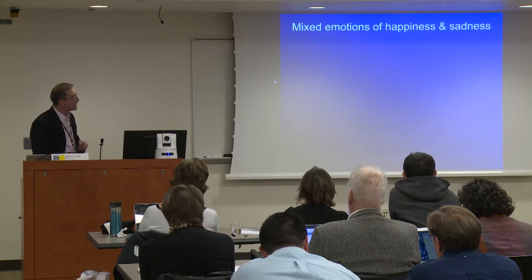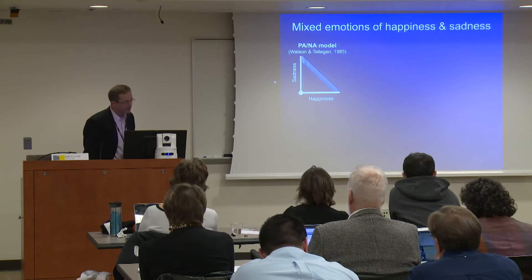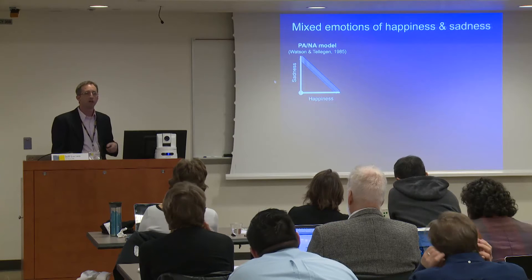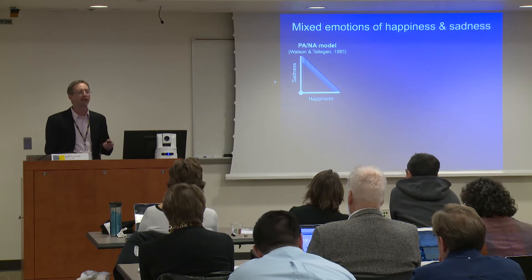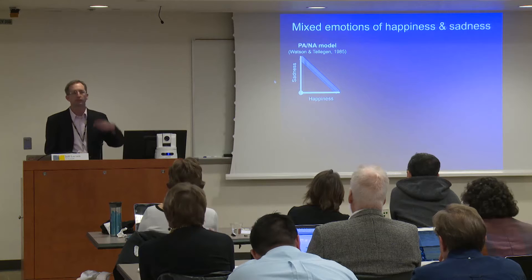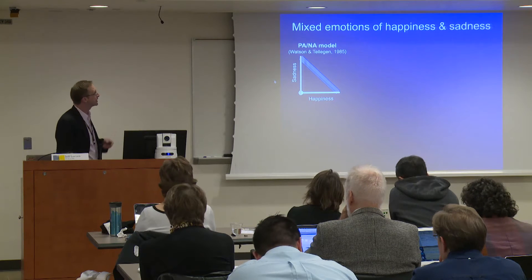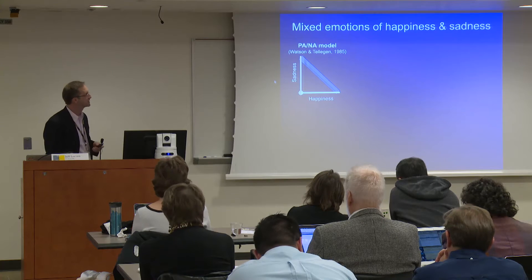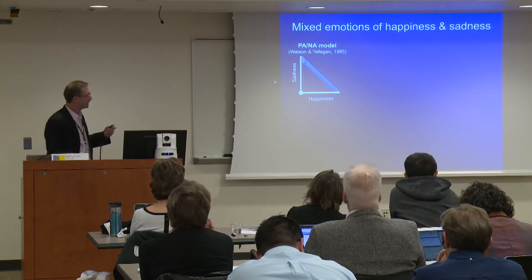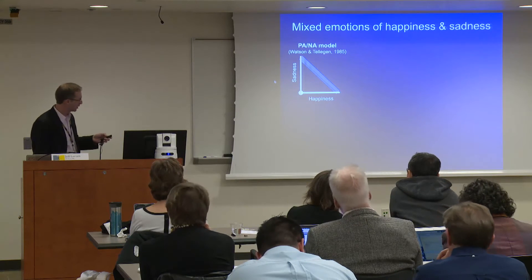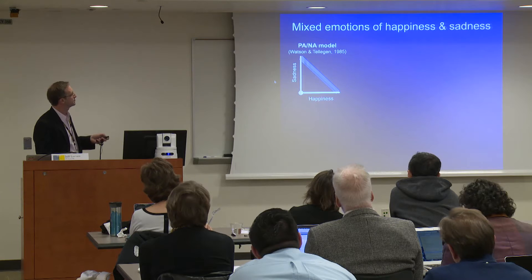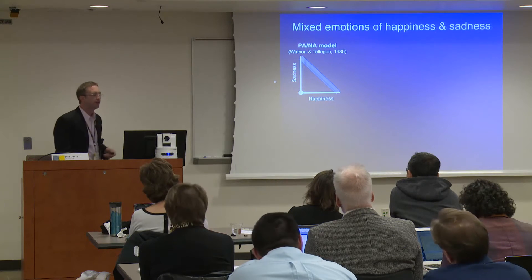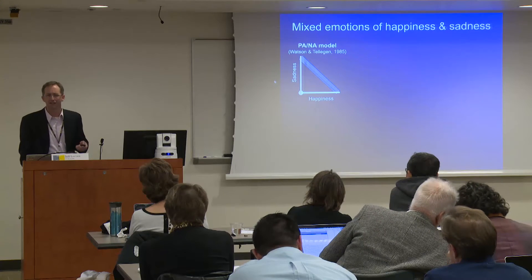Watson and Tellegen contend that if we think about two emotions at opposite ends of a bipolar continuum, we're going to conceptualize them as being perfectly negatively correlated, at least conceptually. But this makes sense only until you think about it a bit more, because if we contend there's a perfect negative correlation, what we are saying is that you cannot be neutral — you cannot be neither happy nor sad. And of course, that isn't the case.